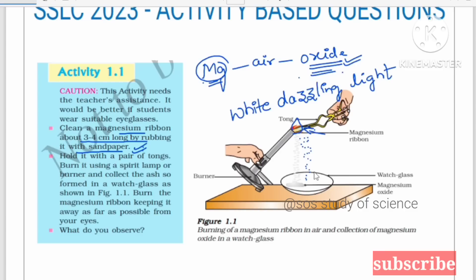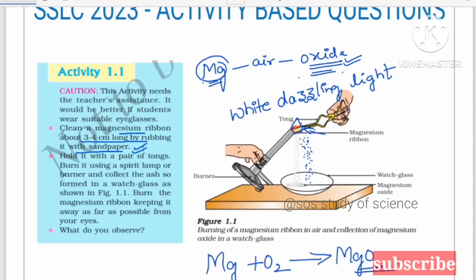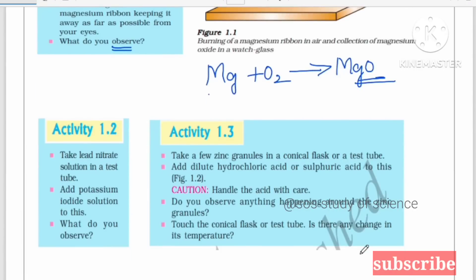Magnesium upon burning becomes magnesium oxide, and this magnesium oxide is found in the form of ash. The equation: magnesium upon burning combines with oxygen to form magnesium oxide. We observe a white dazzling light, and magnesium upon burning forms magnesium oxide.